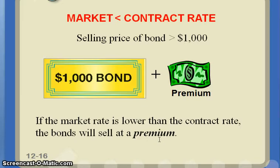Alternatively, let's do the flip side. If my contract rate is 5% and the market rate is something less — say 3% — then my bonds are actually a really good deal. What's going to happen is I'm going to make people pay more for my bond. Do you want my $1,000 bond at 5% when the market's paying 3%? Then you're going to pay something more than $1,000. We're not going to get into further calculations on discounts or premiums; it's more important that you understand the concept and why you would issue at a discount or a premium.